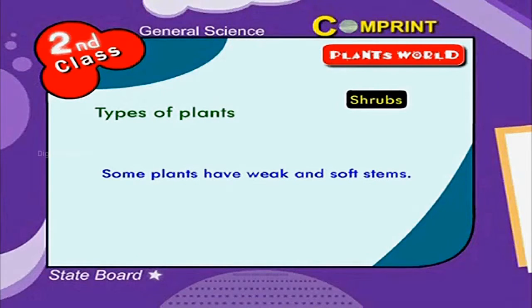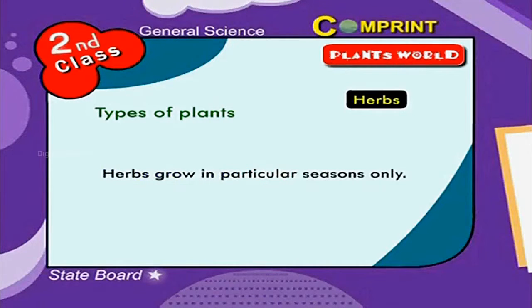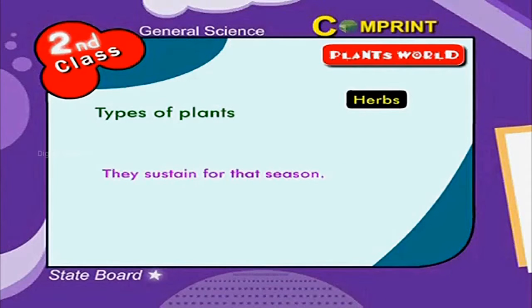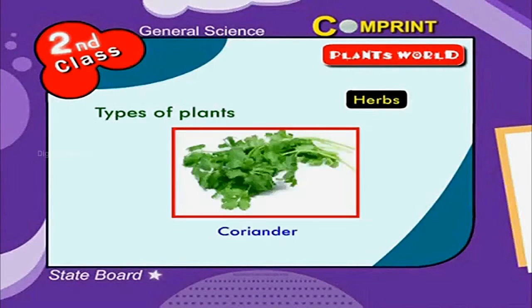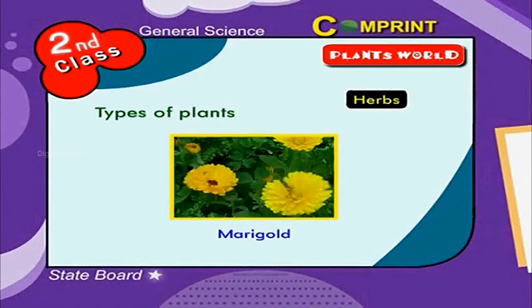These are called herbs. Herbs grow in particular seasons only and sustain for that season. For example, coriander, paddy, and marigold.